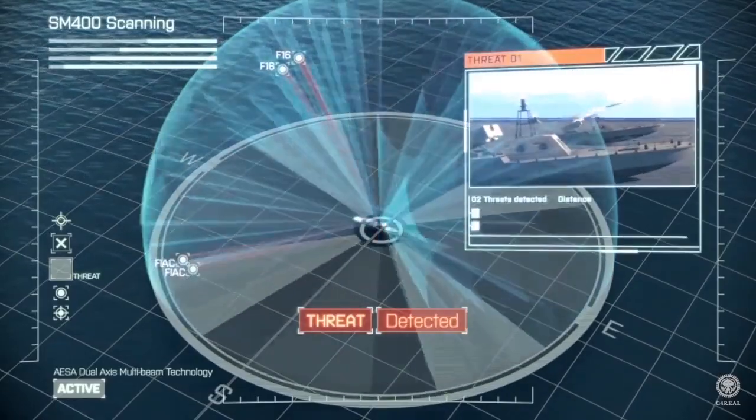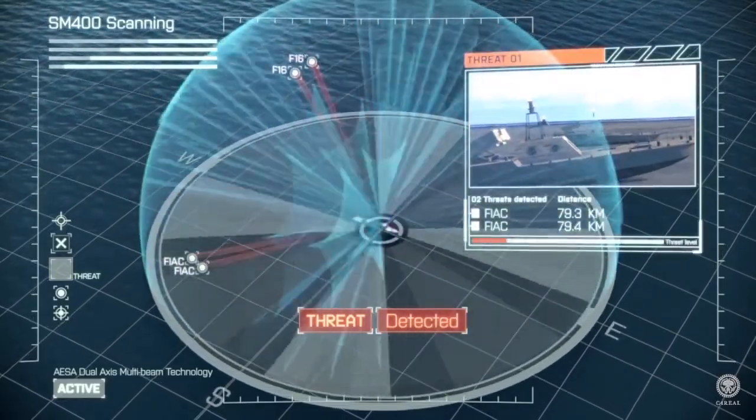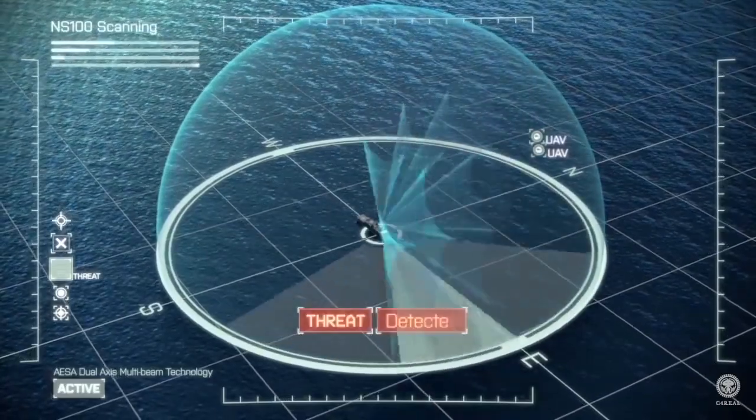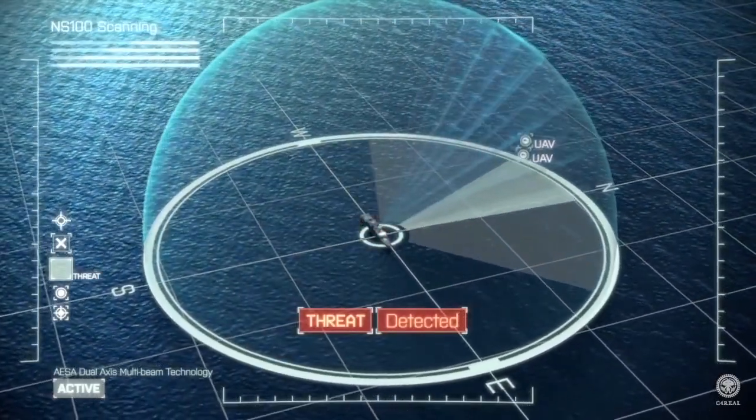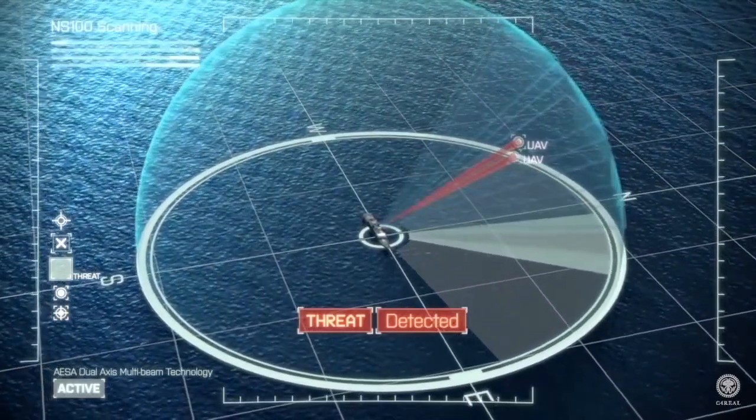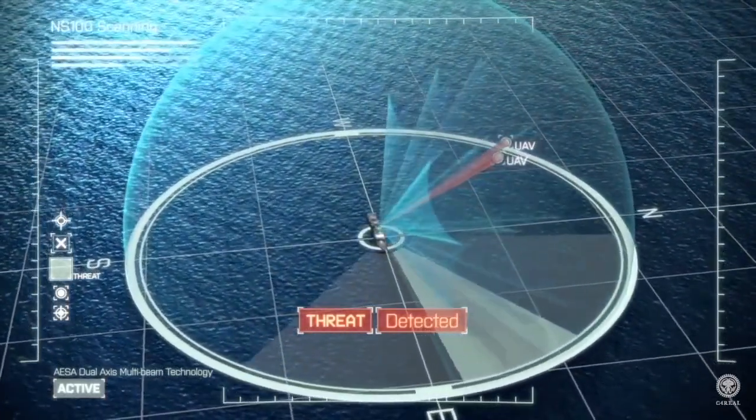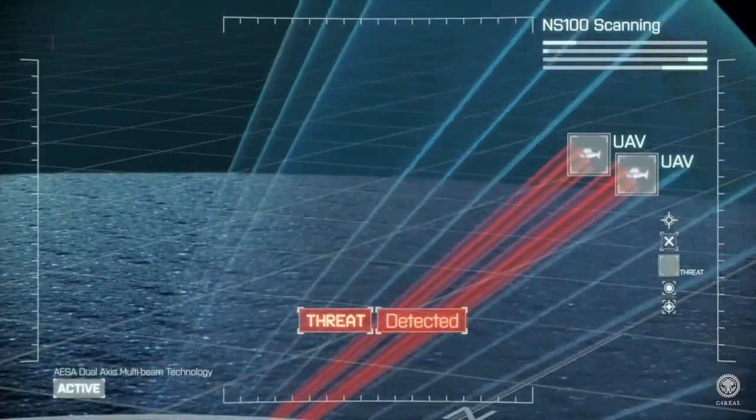Moreover, AESA radars can spread their signal emissions across a wider range of frequencies, which makes them more difficult to detect over background noise, allowing ships and aircraft to radiate powerful radar signals while still remaining stealthy.